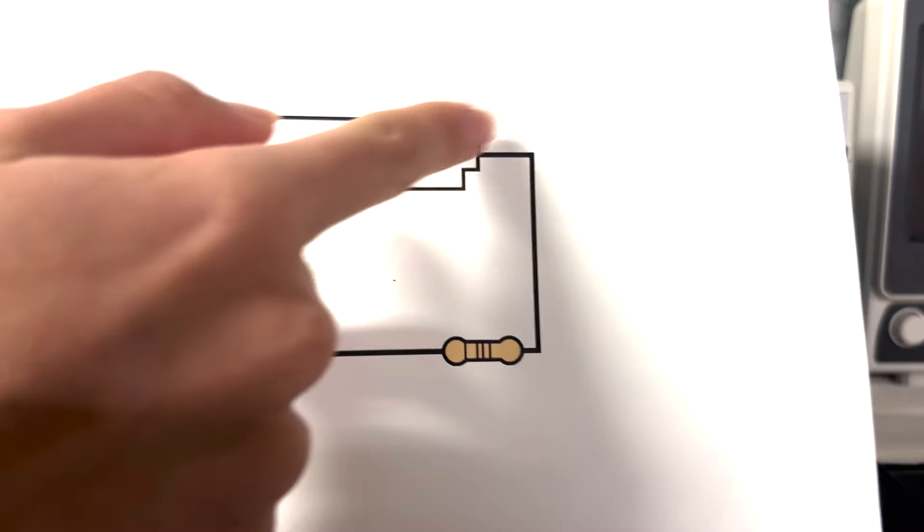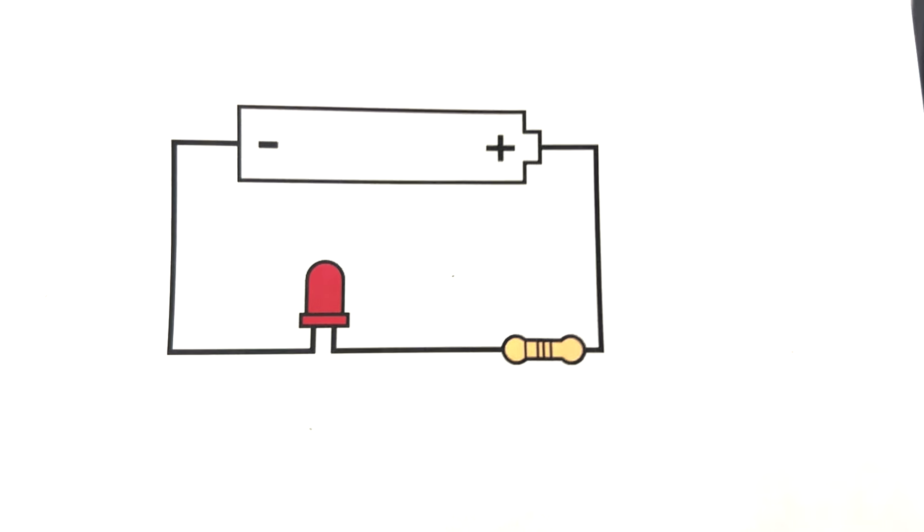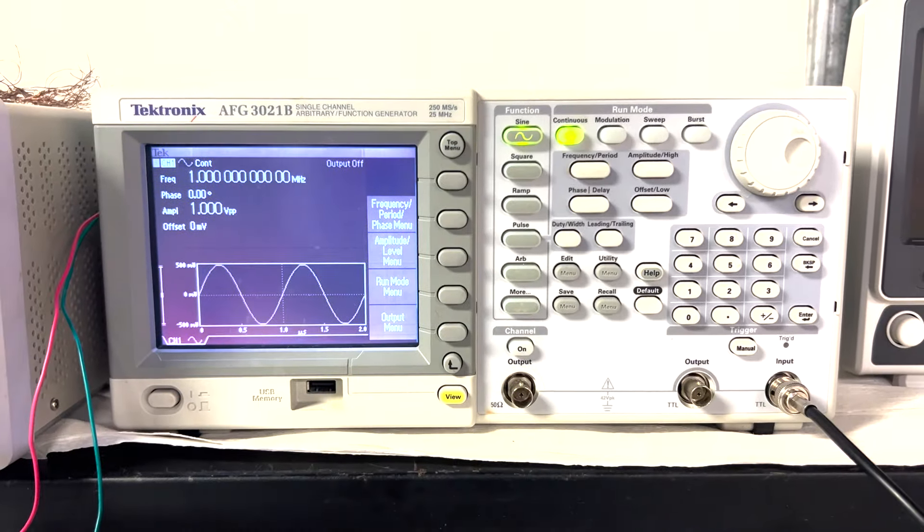In this case, instead of the battery, we're going to have the function generator as an input signal for the circuit. Now that it has loaded, you can see there's different settings on this side.